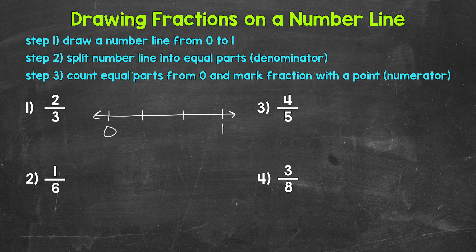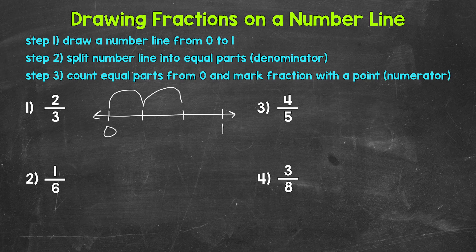Now we move on to step three, where we need to count a certain number of equal parts from zero and mark the fraction with a point. The numerator tells us how many equal parts to count. Our numerator for number one is two, so we count two parts from zero and mark the fraction with a point: one, two. So our point goes right here — that's our fraction, two thirds. Let's label it: two thirds.